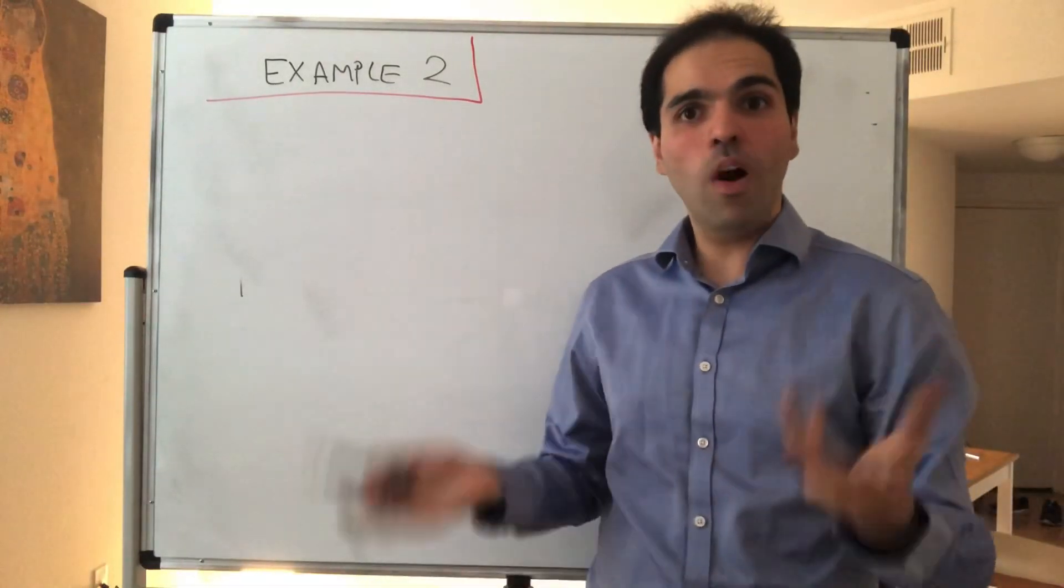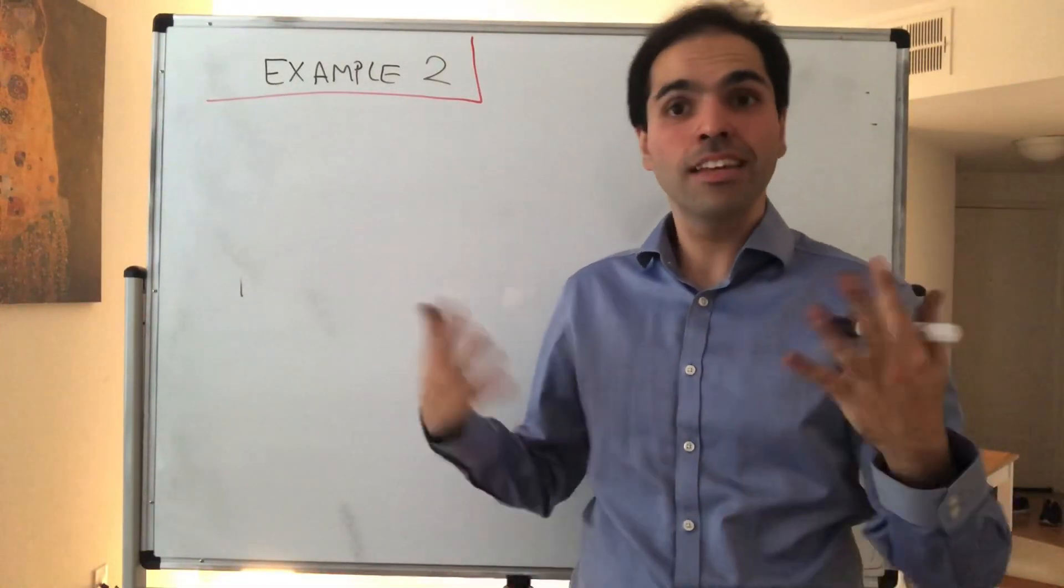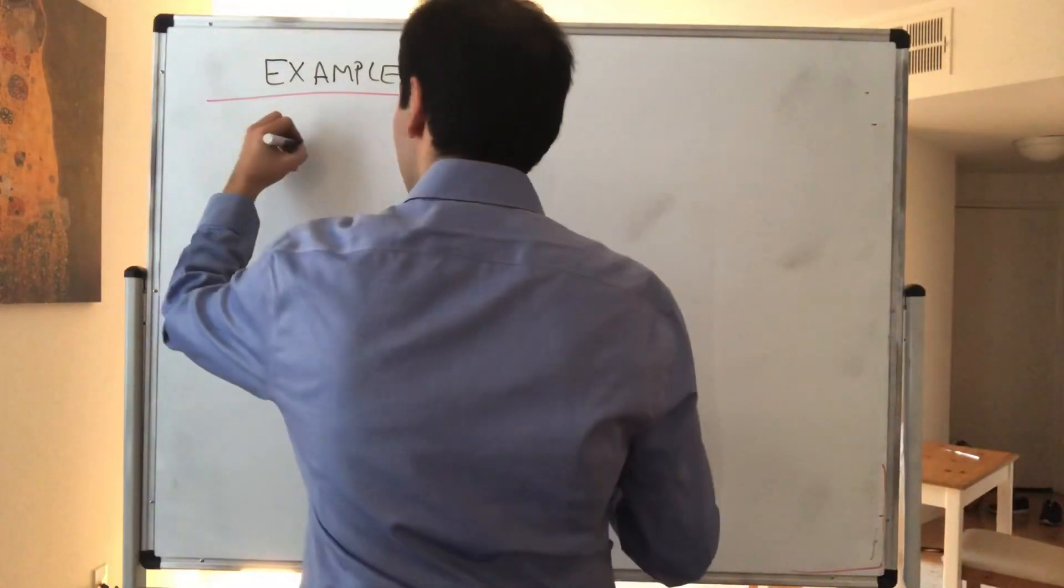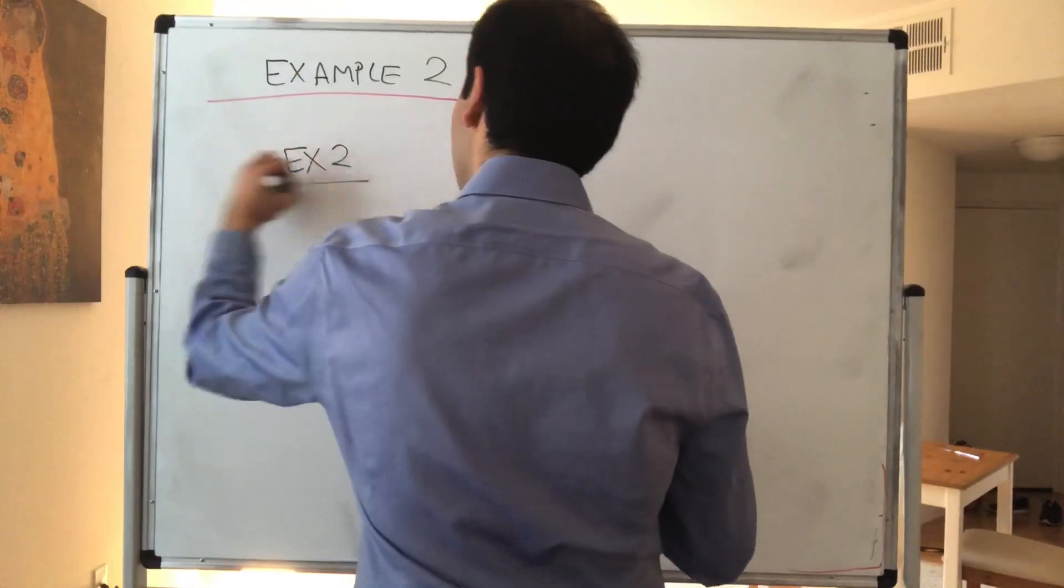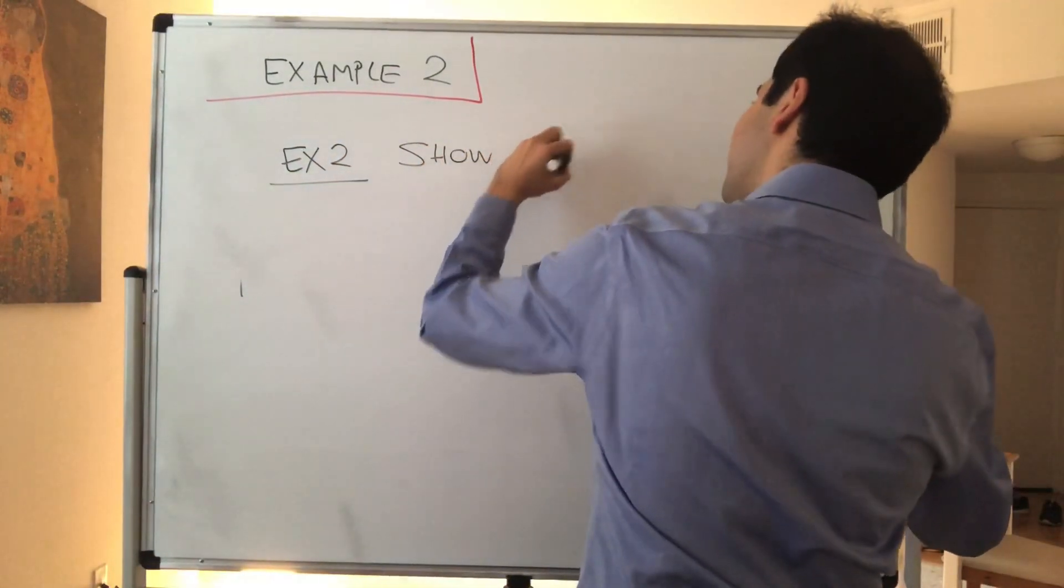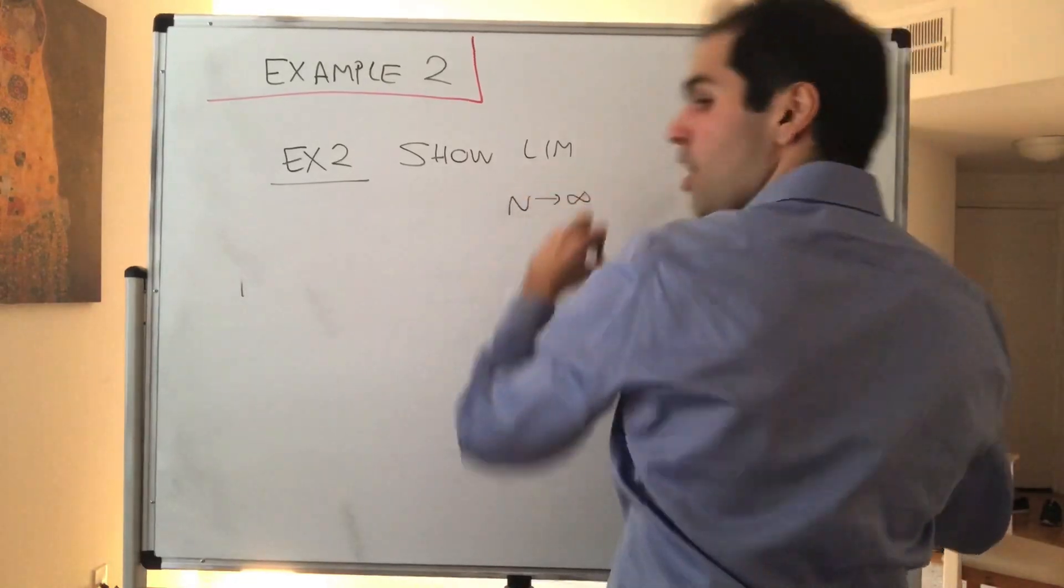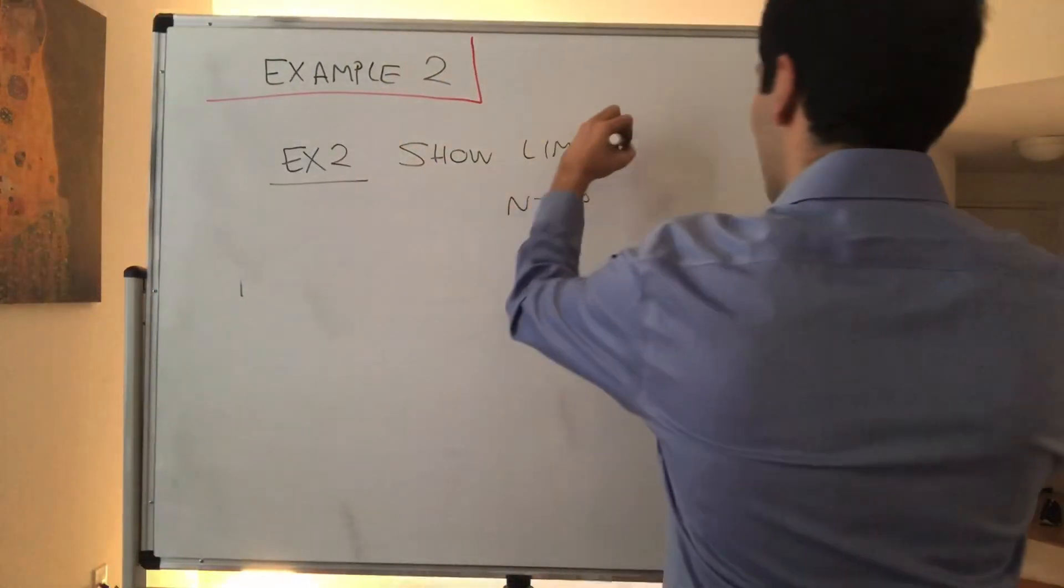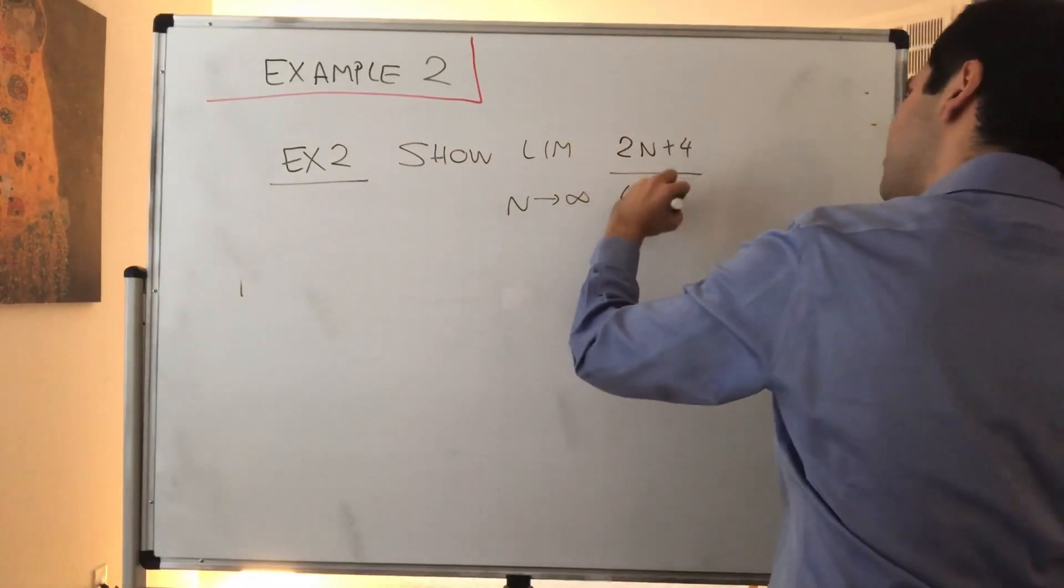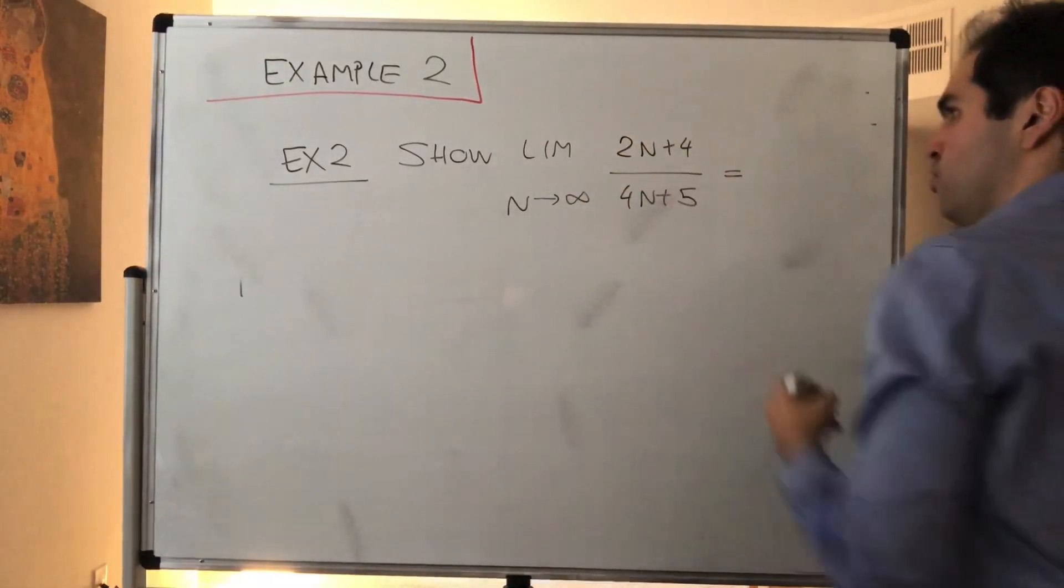All right, thanks for watching, and welcome to our second practice with the rigorous definition of a limit. Today, what we would like to show is the following: we would like to show that the limit as n goes to infinity of 2n plus 4 over 4n plus 5 is what?